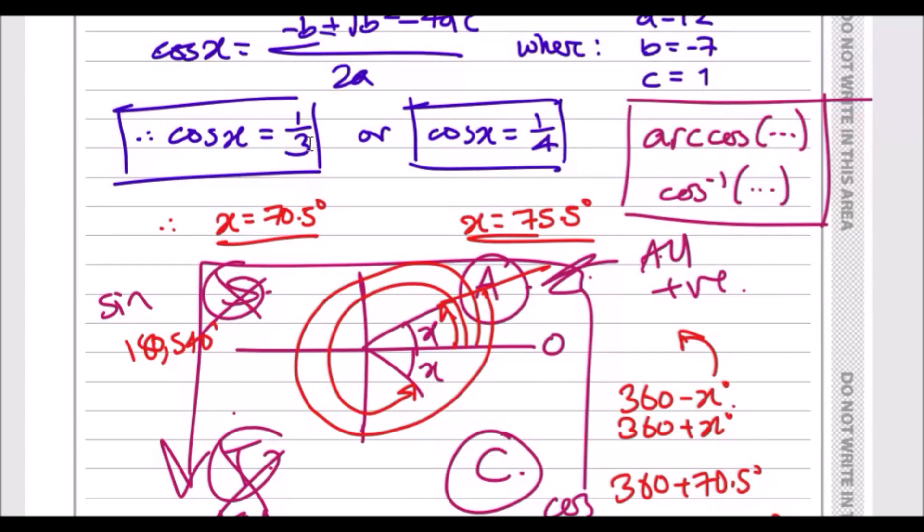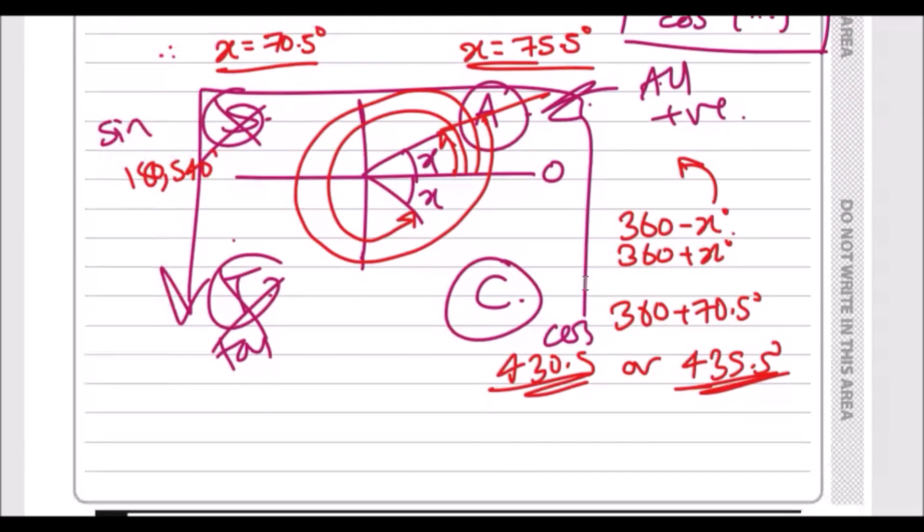That's if the result is positive. If we had a negative result, then you don't use A and you wouldn't use the function given. So if it was cos x equals negative a third, we don't use C or A, in fact we use S and T. But anyway, that's another day.